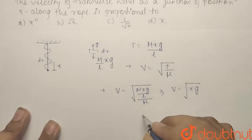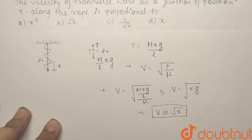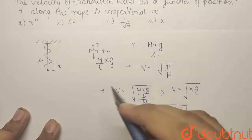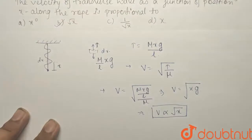So velocity comes out to be equal to under root xg. So we can directly see that V is directly proportional to x to the power half. So V has a tendency of half power to x. So having a look at the options, option B under root x is the right answer.